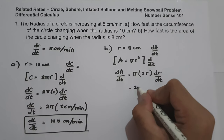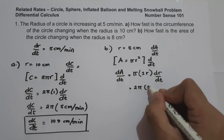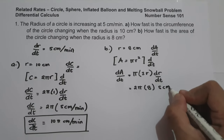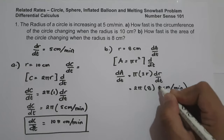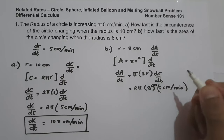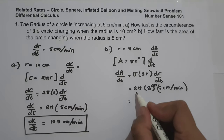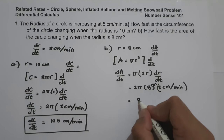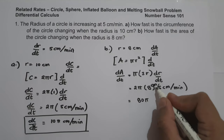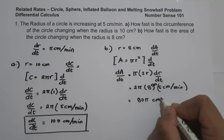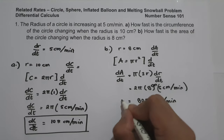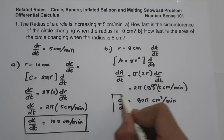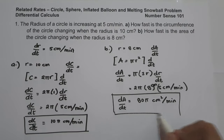Substituting r equals 8 cm and dr/dt equals 5 cm per minute, we have dA/dt equals 2π times 8 times 5. That gives us 2 times 8 equals 16, times 5 equals 80. So therefore, dA/dt equals 80π cm² per minute. This is our answer.